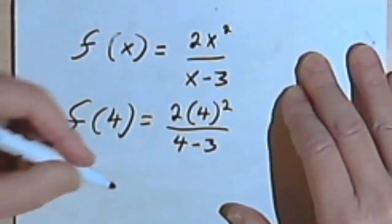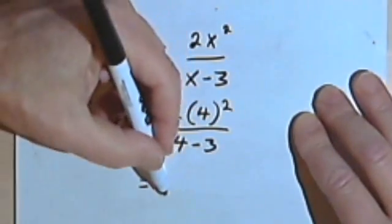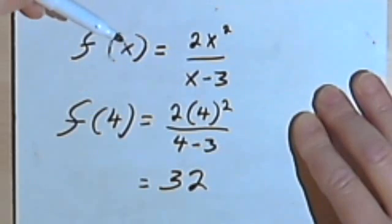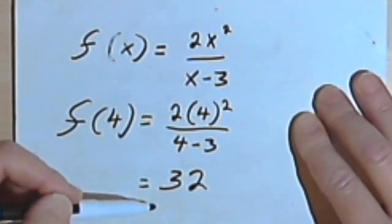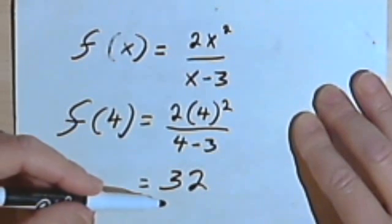So let's find out what that is. Well, 4 squared is 16, and 2 times 16 is 32, and then 4 minus 3 is 1, so I don't even have to write the 1 as a denominator. So basically, f of 4 equals 32.